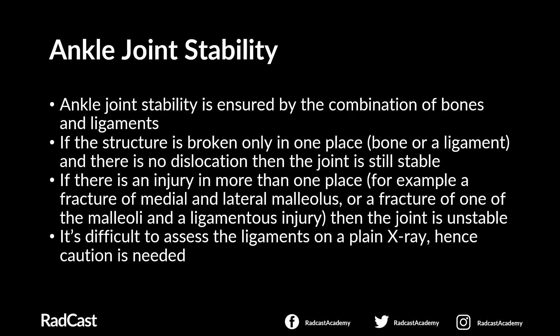We need to talk about joint stability because it has major implications for patient management. If the joint is stable, then the bones stay in an anatomical position, which gives the best chance of union and joint healing. If the joint is unstable, however, then the relevant bones have the ability to misalign relative to normal positions, which impairs joint healing. The ankle joint stability is maintained by the combination of bones and ligaments. If the structure is broken only in one place and there is no dislocation, then the joint is stable. However, if there is injury in more than one place — which can include both bones and ligaments — then the joint is unstable. Ligaments cannot be seen on an x-ray, but their usual positions are known, so judging by the site of bone injury we can implicate where the ligament has also been affected, while caution is still needed.